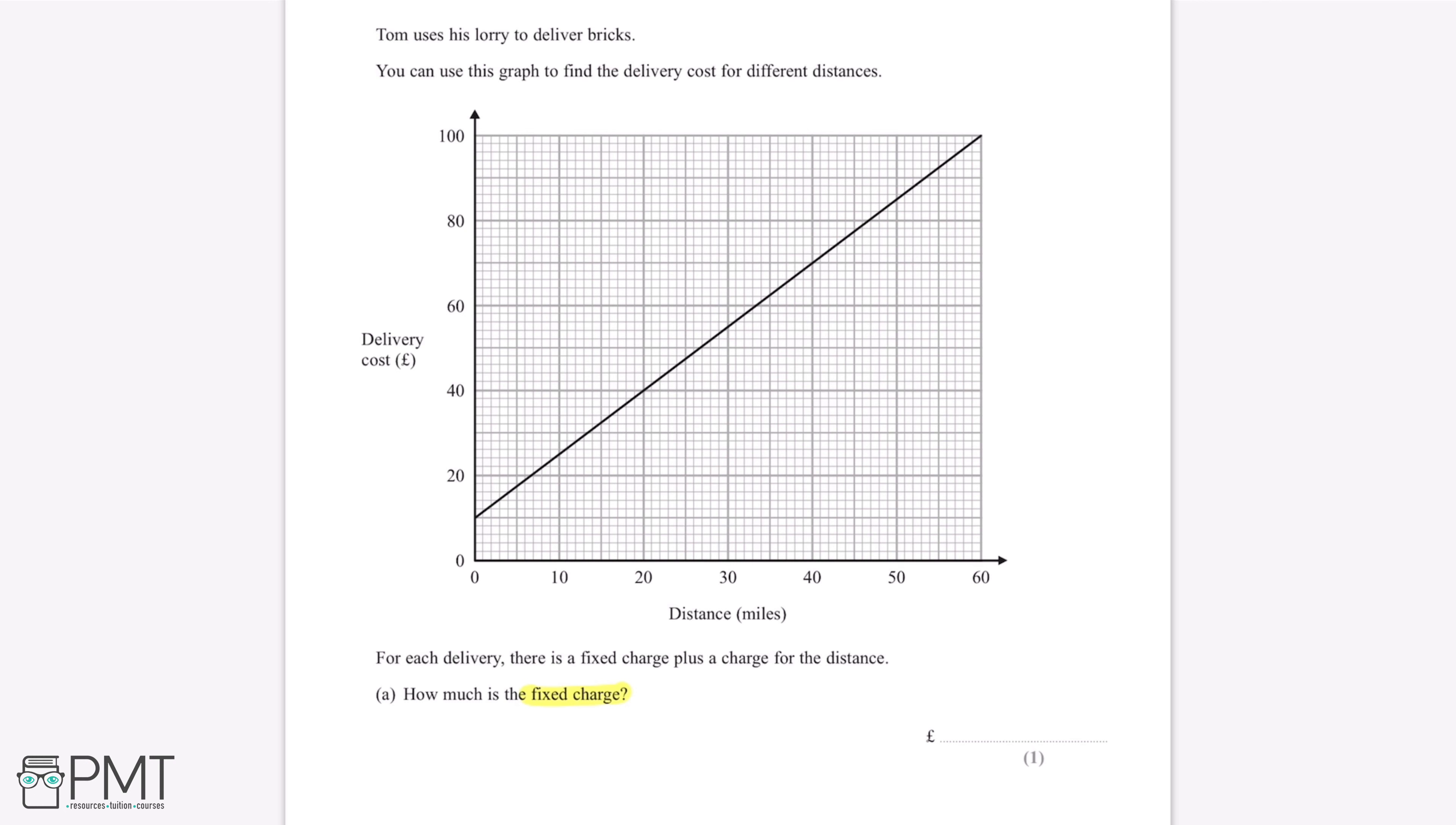This is because when someone has traveled zero miles, there will be no extra charge for the distance traveled. Therefore, the fixed charge is the price when distance is equal to zero, which is here. If we read off the graph, this gives us a fixed charge of 10 pounds.